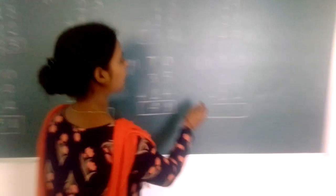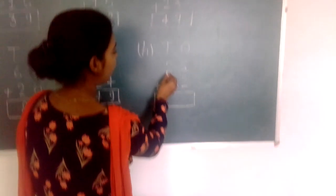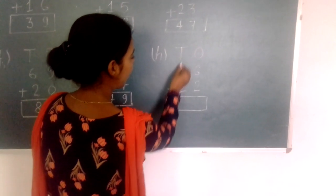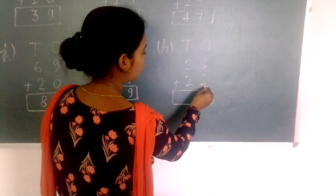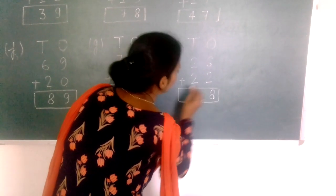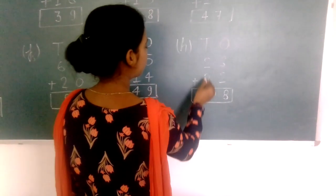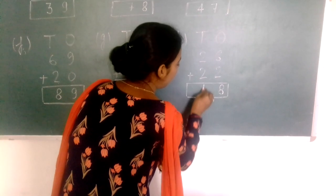Next: two tens, six ones (26) plus two tens, two ones (22). Six plus two equals eight. Two tens plus two tens equals four tens.